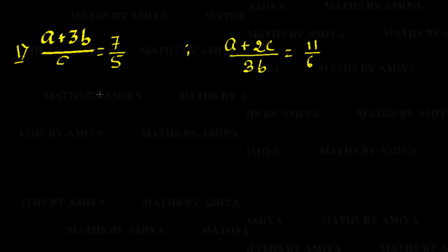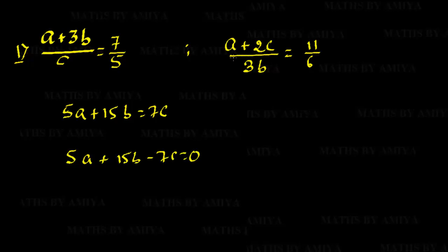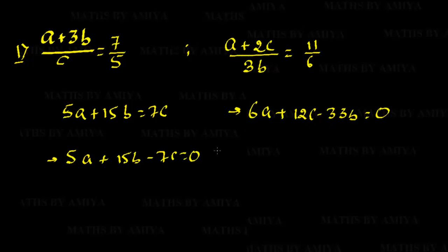If you are not able to find the relation, then one of the best methods is to solve the equation. How? Cross multiply: that is 5a + 15b = 7c, so 5a + 15b − 7c = 0. And similarly we get 6a + 12c − 33b = 0. So we have two equations in three variables, all equal to 0. This concept video is all about: if we have three variables and two equations equal to 0 — or more generally, n variables and n−1 equations equal to 0 — how we get the ratio and solve the equations.